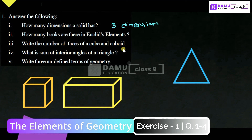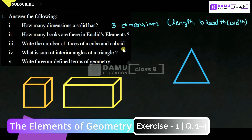The three dimensions are length, breadth or width, and height. To show this, let's take one solid — a cuboid — which has length, breadth, and height.